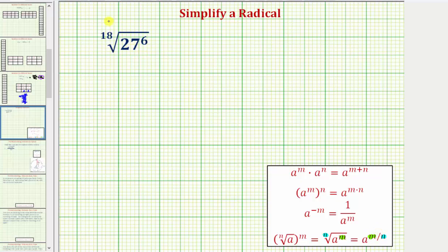So notice in our radical, the index is 18 and the exponent is 6, which means we can rewrite this as 27 raised to the power of 6/18ths.